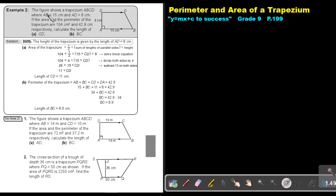Let's look at example 2. The figure shows a trapezium ABCD where AB is 15 cm, AD is 8 cm. If the area and the perimeter of the trapezium are 104 and 42.9, so this will be the area, the one they mentioned first, and this will be the perimeter, the one they mentioned second, respectively. Calculate the length of CD and then BC.